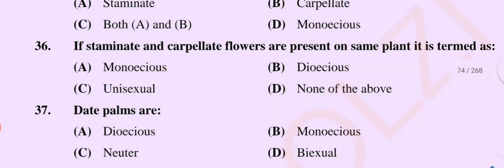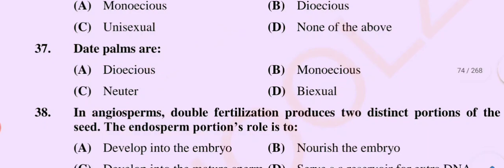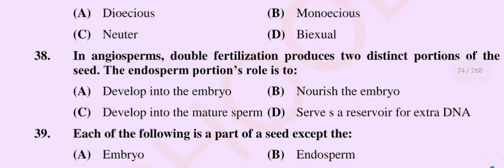Question number 37: Date palms are — option A dioecious, option B monoecious, option C neuter, option D bisexual. The correct option is option A: dioecious.